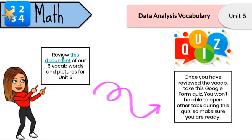For the math slide, you're going to click on where it says to review this document of our six vocab words and pictures for unit five. We're actually jumping ahead to unit five and then coming back to do unit four after. So as always, we're going to start with your vocab — there is also a Quizlet on that link. Once you've reviewed the vocab words, you can take the Google Form quiz. If you click on that quiz icon, you won't be able to open other tabs during the quiz, so just make sure you're ready before you click on it.